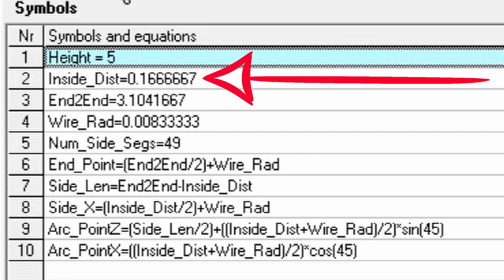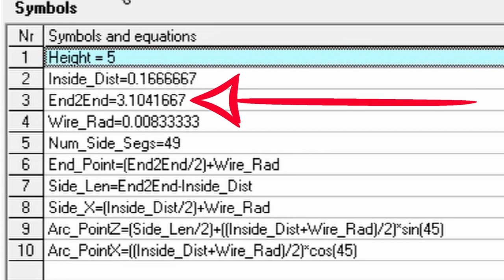Then we have the inside_dist, which is the horizontal distance between the antenna conductors on the inside of the antenna. It is also the diameter of the end disks in the bending jig. End2End is the vertical distance between the inside of the ends of the antenna. It is also the distance between the two end disks in the bending jig, which you will see in a little while.